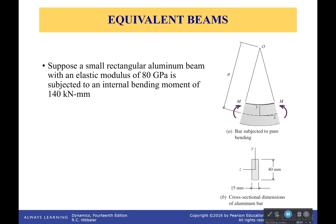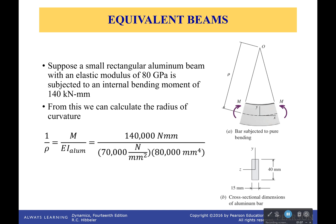Okay, so for this we're going to be looking at something like this. We have an aluminum beam with an elastic modulus of 80 gigapascals. It's subjected to an internal bending moment of 140 kilonewton-millimeters. Now from this we can calculate the radius of curvature if we want to for this very simple one.